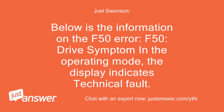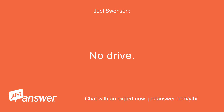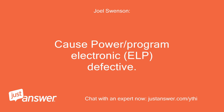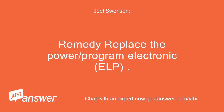Below is the information on the F50 error. F50: drive symptom in the operating mode — the display indicates technical fault. The program is stopped, the water intake valve is closed, and the drain pump is switched on for 120 seconds. Cause: power/program electronic (ELP) defective. Remedy: replace the power/program electronic (ELP).